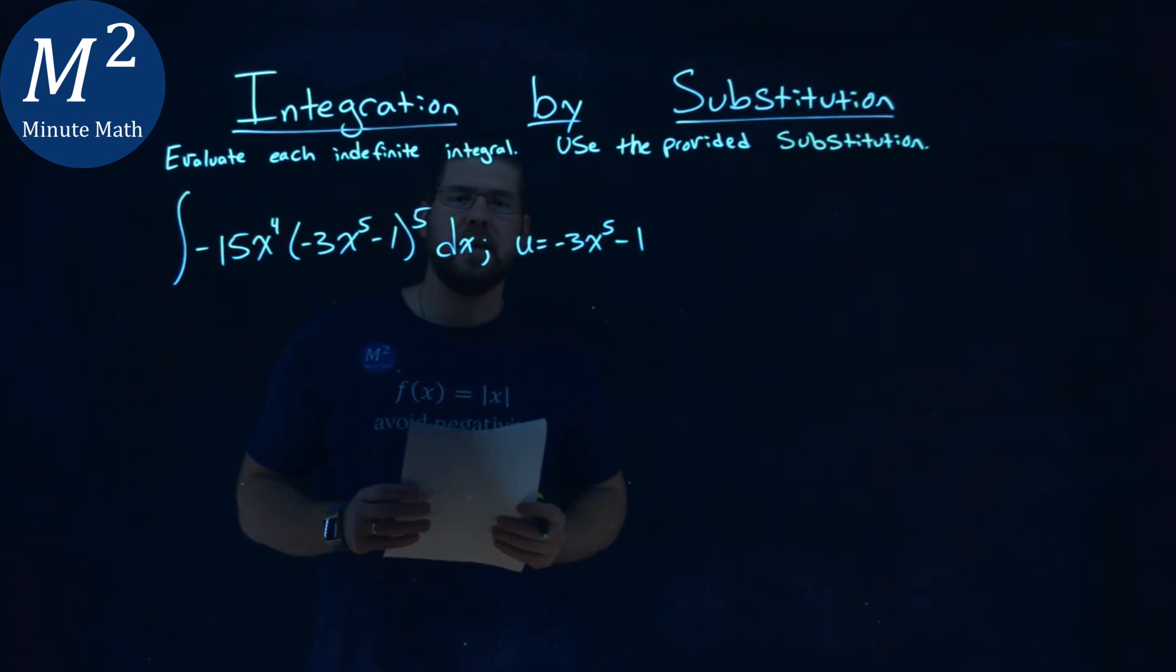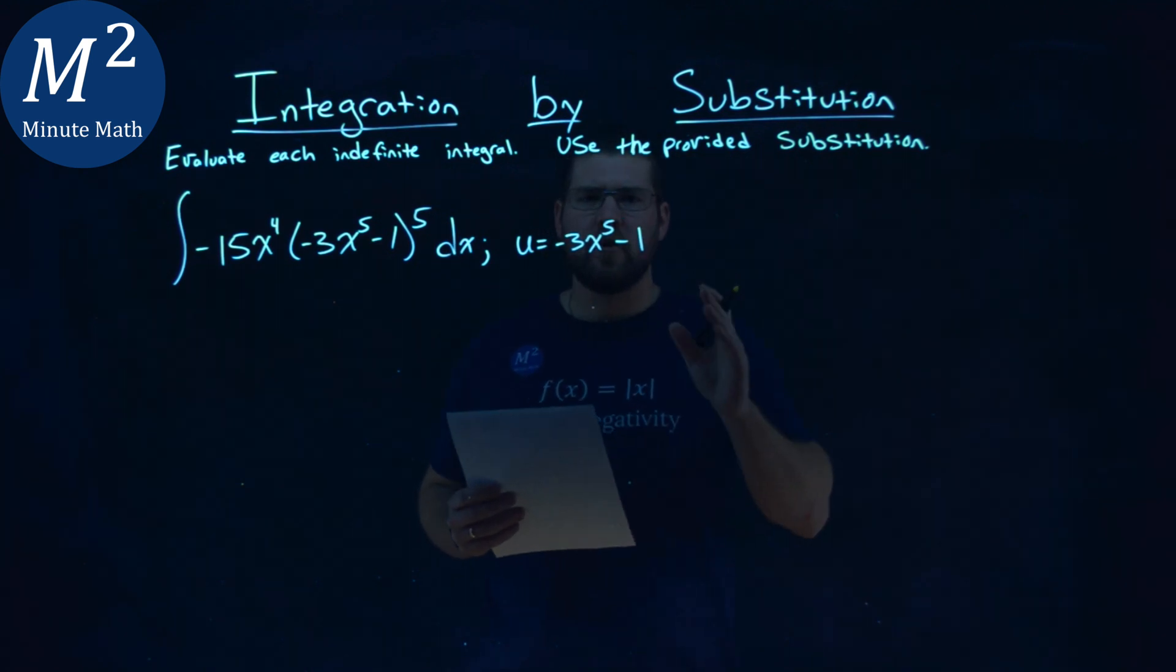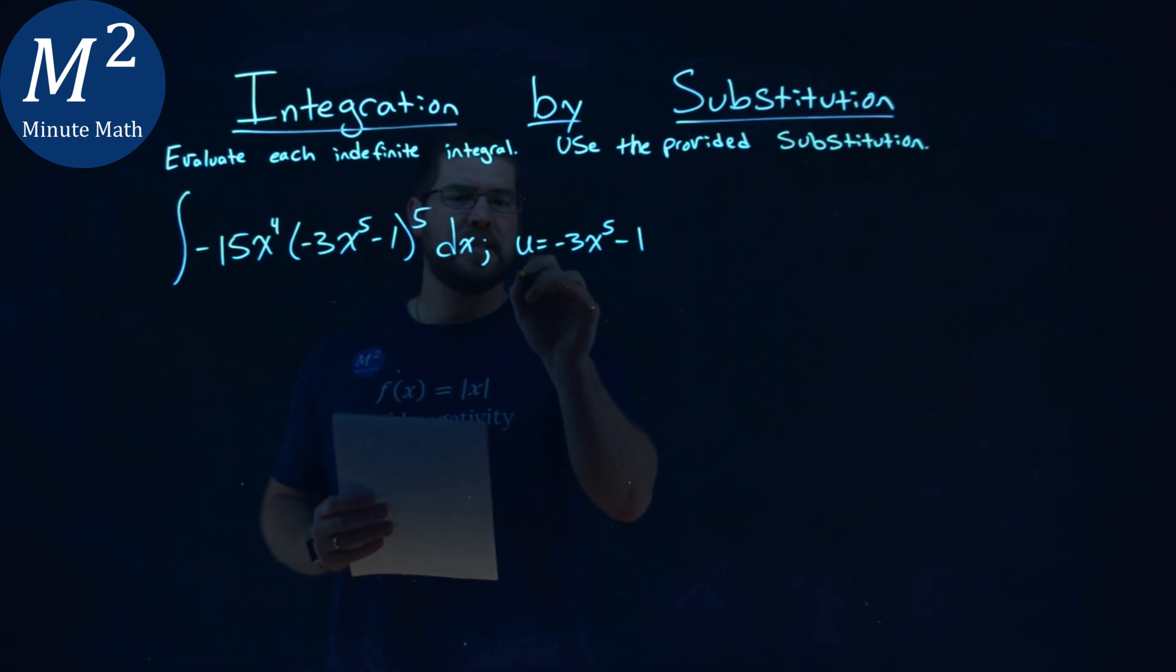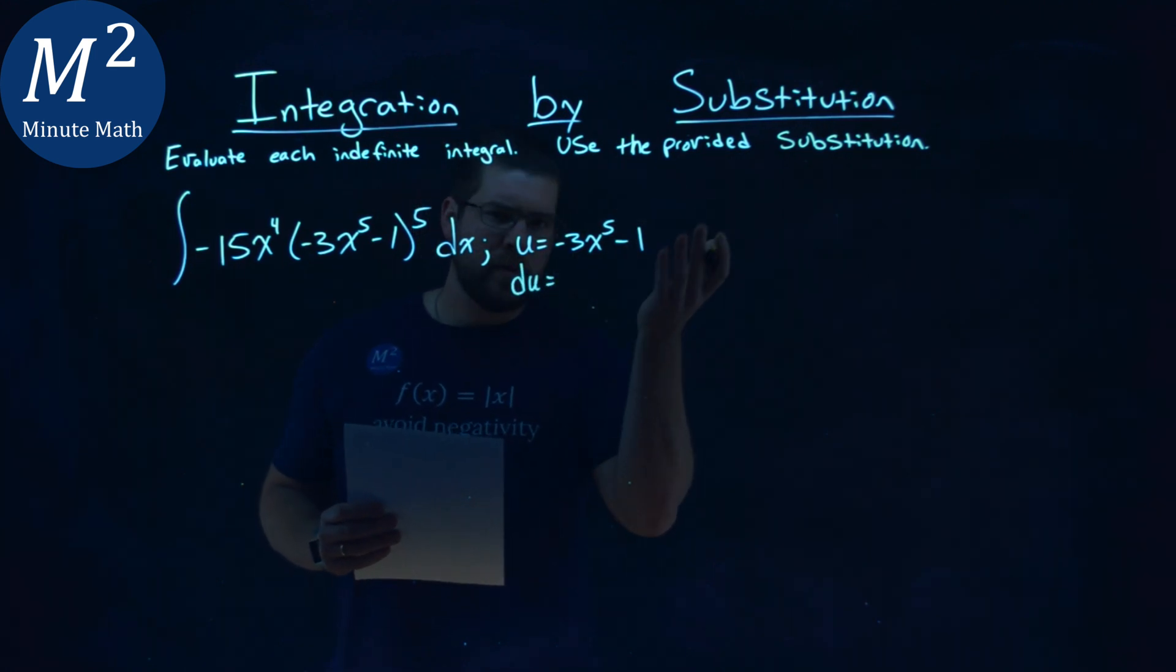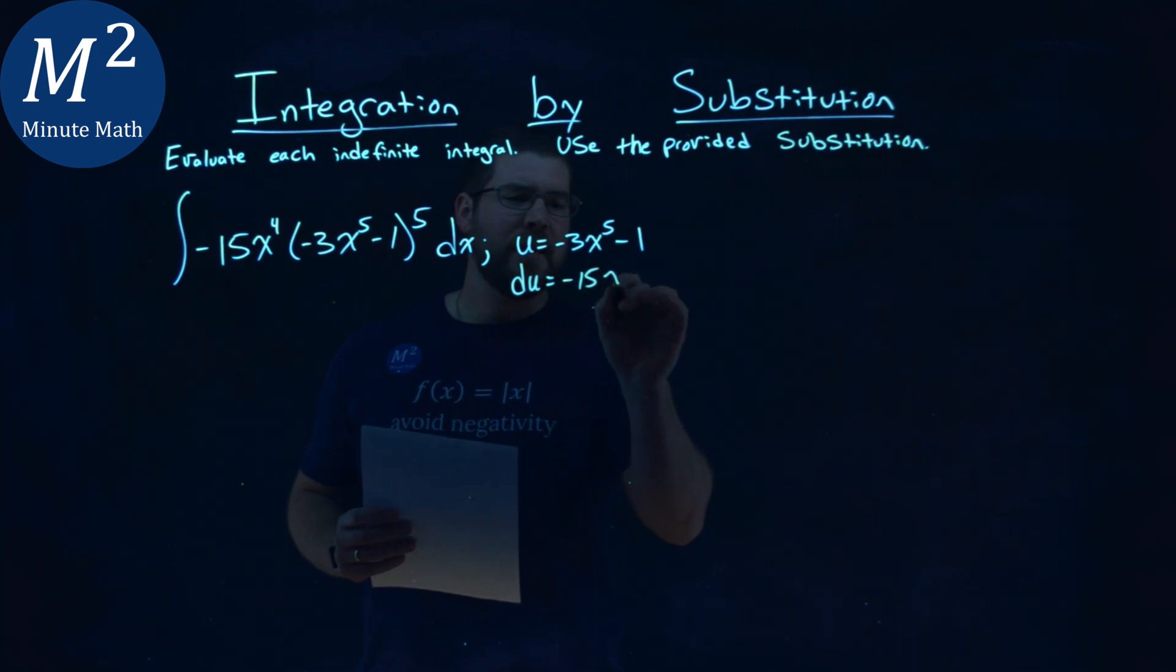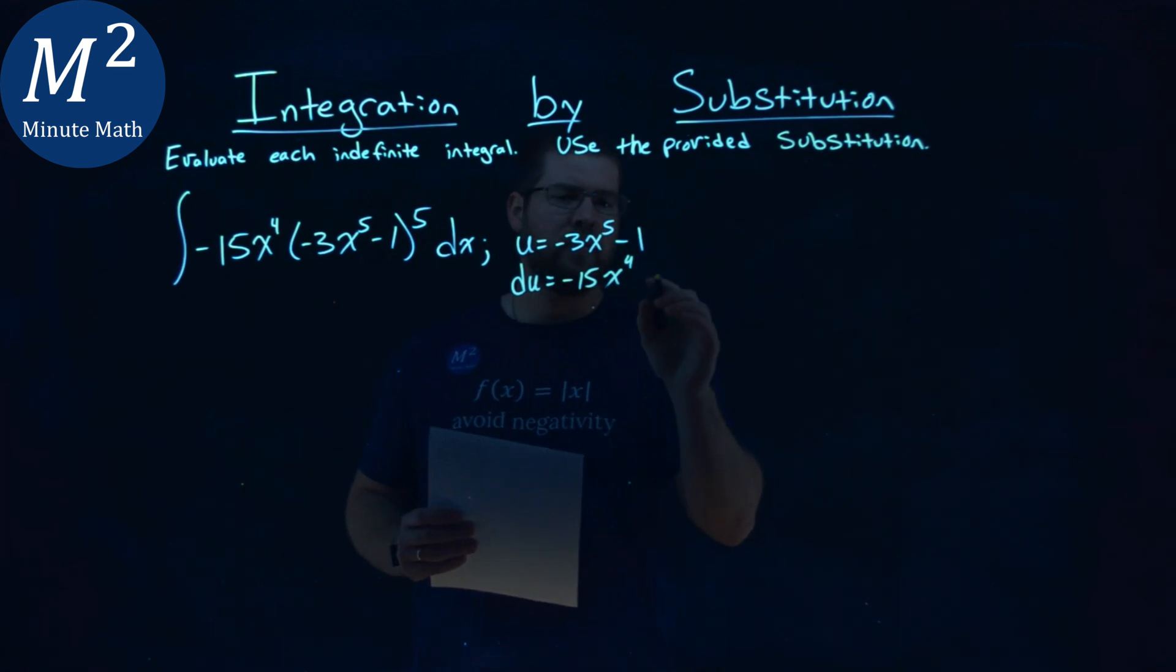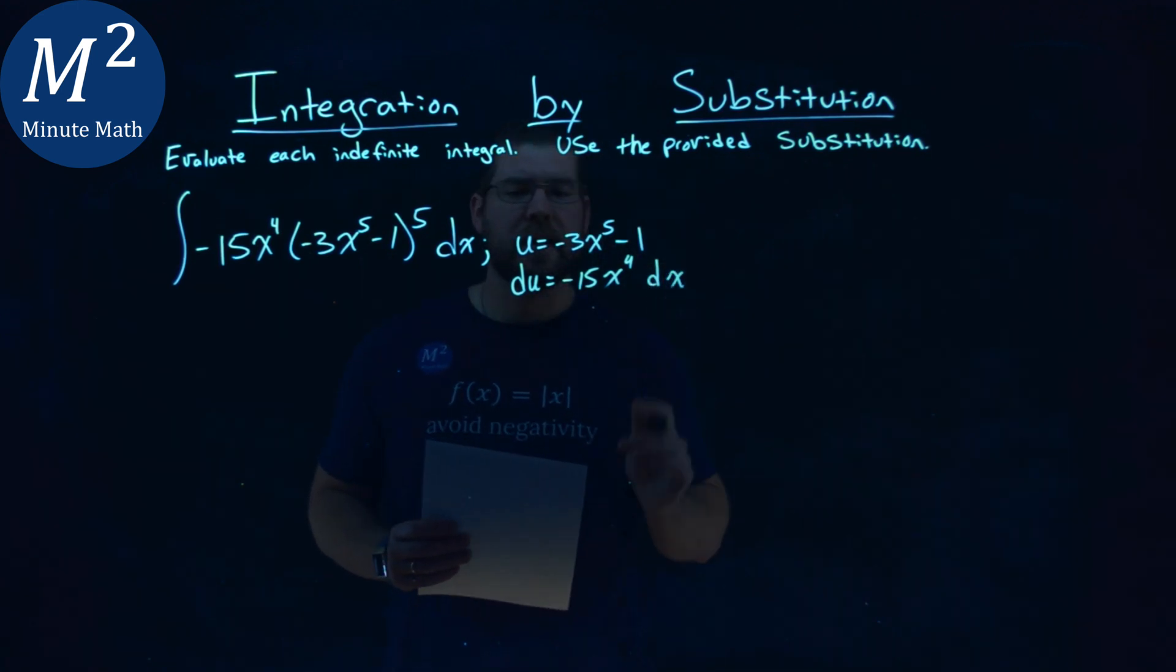Now, the first thing here is I'm already given my u value, so I'm going to find my du value, the derivative there. So my du value, taking the derivative of what's given to me, 5 comes down and we have negative 15x to the fourth power here. Derivative of negative 1, constant, don't really need it, and then dx here.